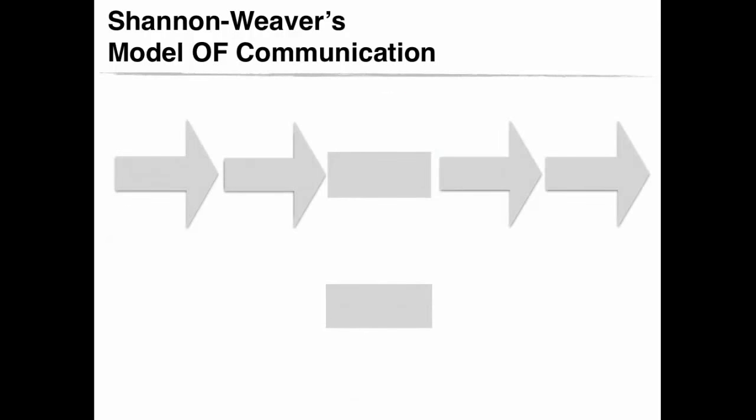In order to understand this model thoroughly, we need to define each key element. This model begins with the source of communication. This is where the origin of the communication stands. The source can be an individual or a group that has a reason to communicate something. In other words, the communication process begins when an individual or a group wants to give a message to another individual or a group.